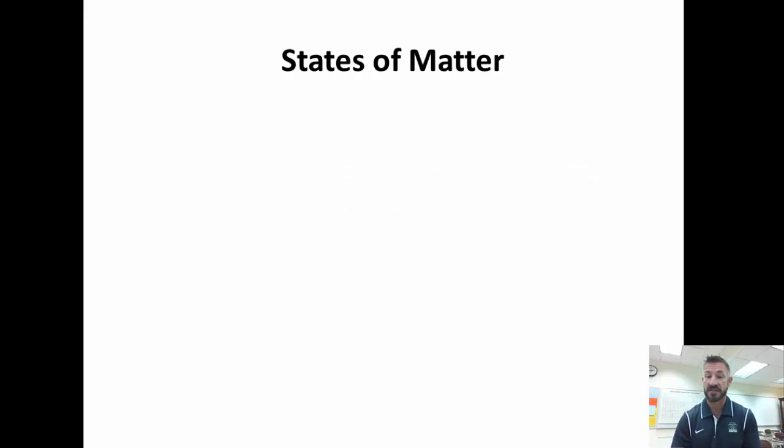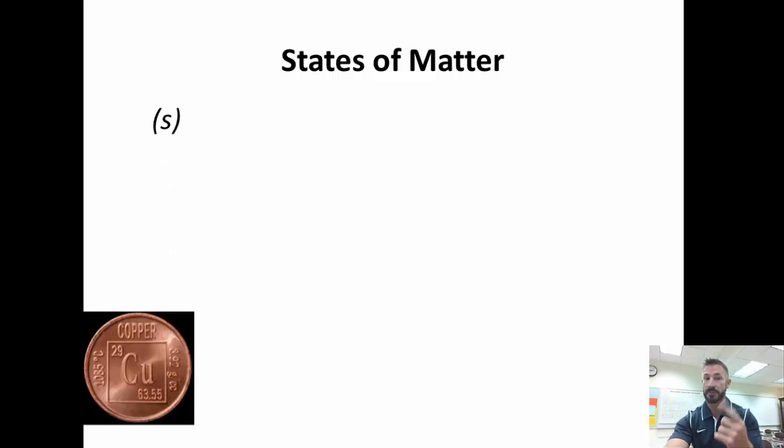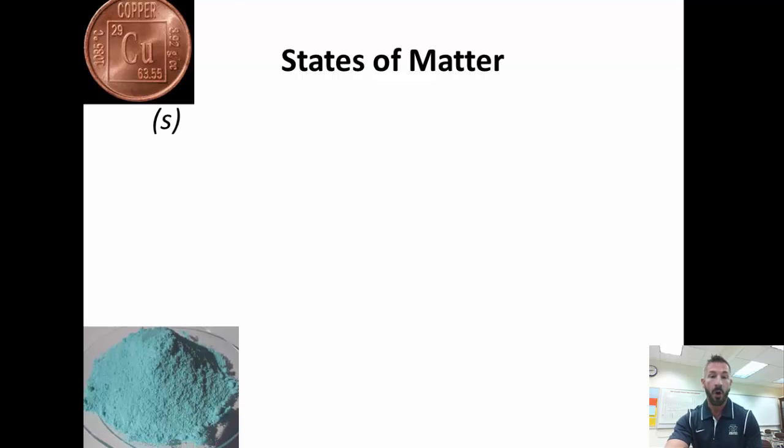First of all, we need to go over the states of matter. There are four states of matter that are going to be written in chemical reactions. First, there's S. S stands for solid, like a penny, or powder that's dissolved in another substance.